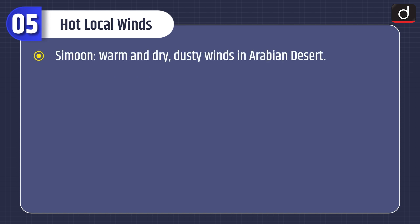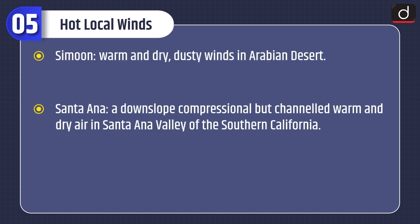Simoom: warm, dry, dusty winds in the Arabian desert. Santa Ana: a downslope, compressional but channeled, warm and dry wind in the Santa Ana Valley of Southern California.